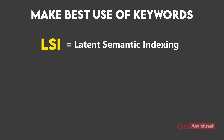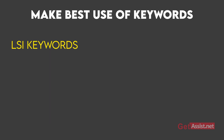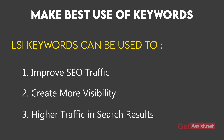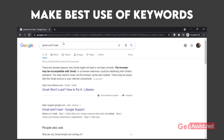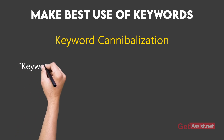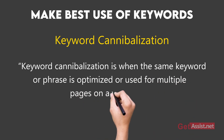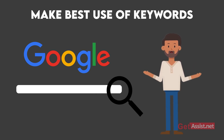LSI — which stands for Latent Semantic Indexing — is a method used by Google and other search engines to study and compare relationships between different terms and concepts. LSI keywords can be used to improve SEO traffic and create more visibility in search results. They are search terms related to the main keyword you are targeting; they support your content and make it easier for both users and search engines to understand what your content is about. You also need to keep in mind to avoid keyword cannibalization — this is when the same keyword or phrase is optimized for multiple pages on a website.